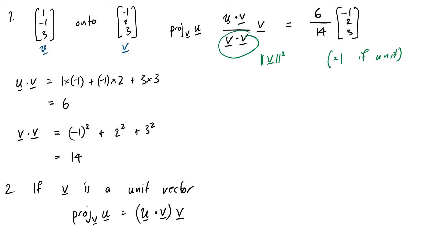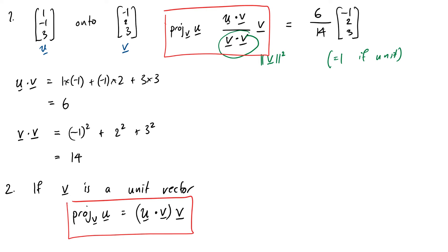This is important because often we deal with sets of vectors that are unit vectors, and projection will often take this form. It's a lot easier to work with, so it's worth being aware that there are two different ways of doing it. If we're working with vectors of length 1, this formula is a lot simpler.